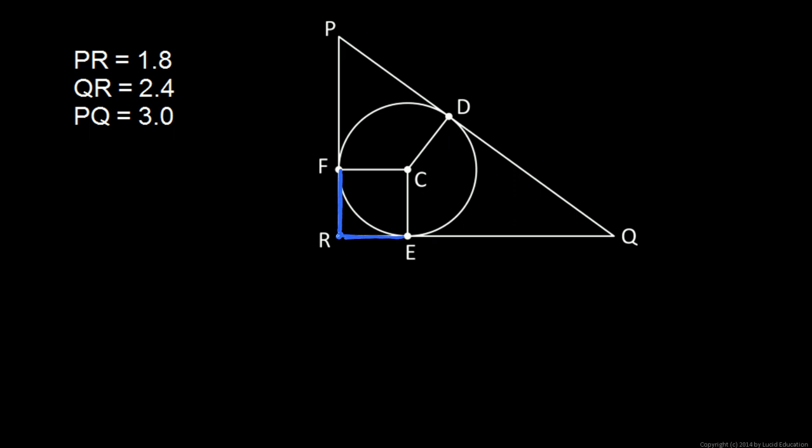Those are what we call tangent segments, and tangent segments from a given point are always equal. We already actually know that RF and RE are equal, because that's a square. But let's give them a name. We'll call them both A.